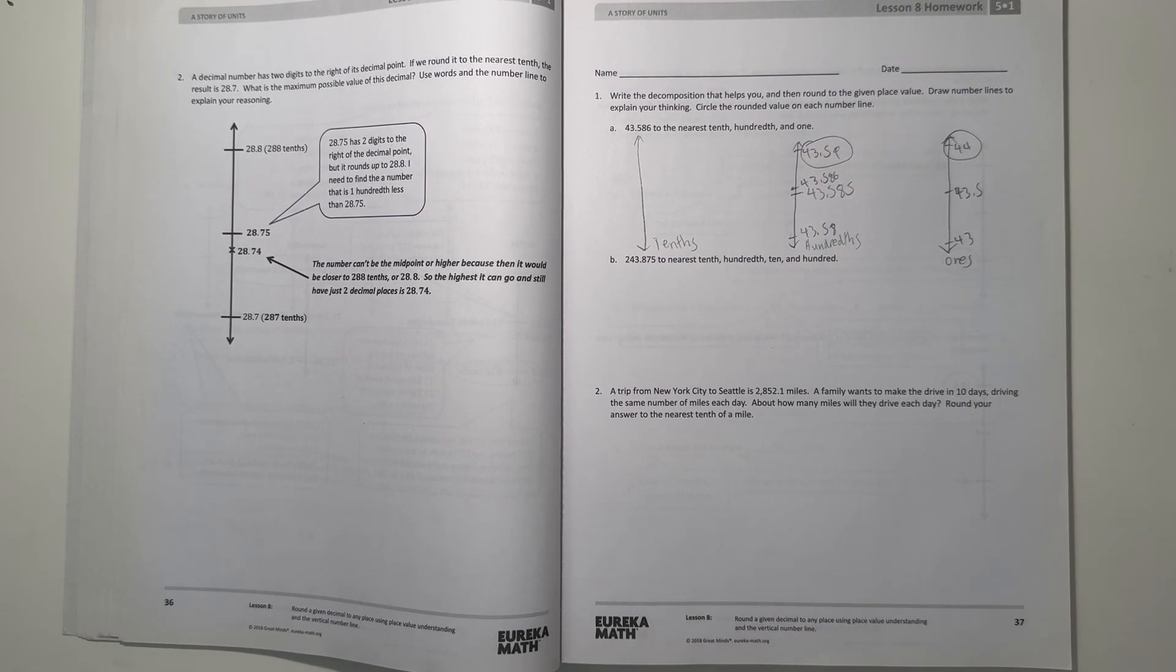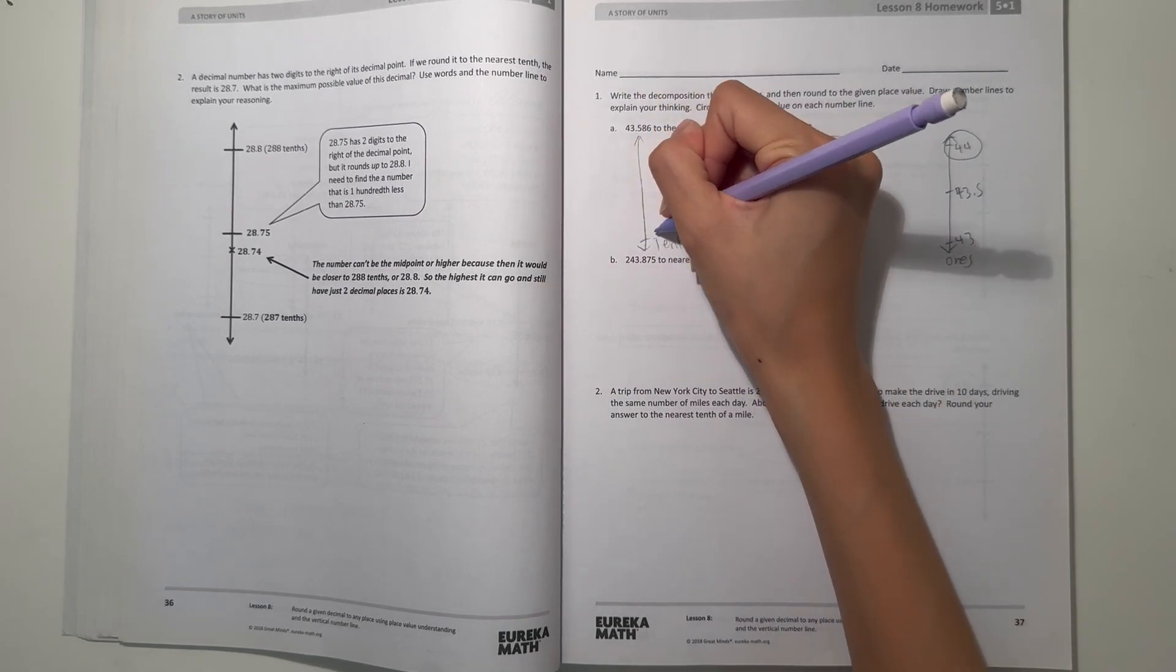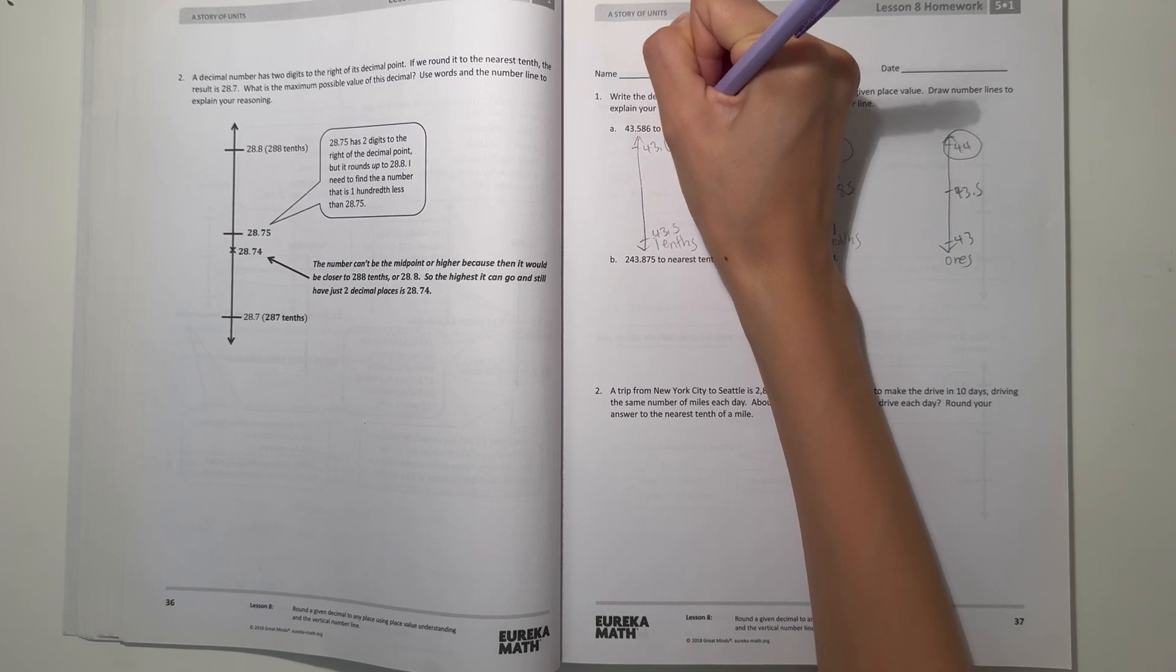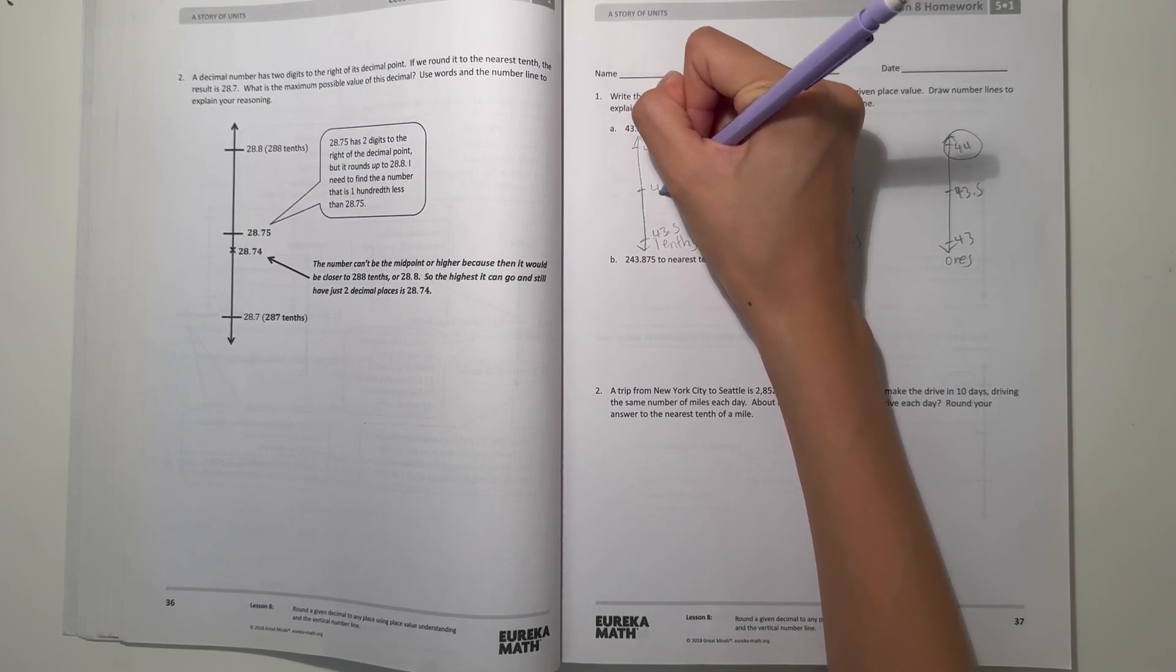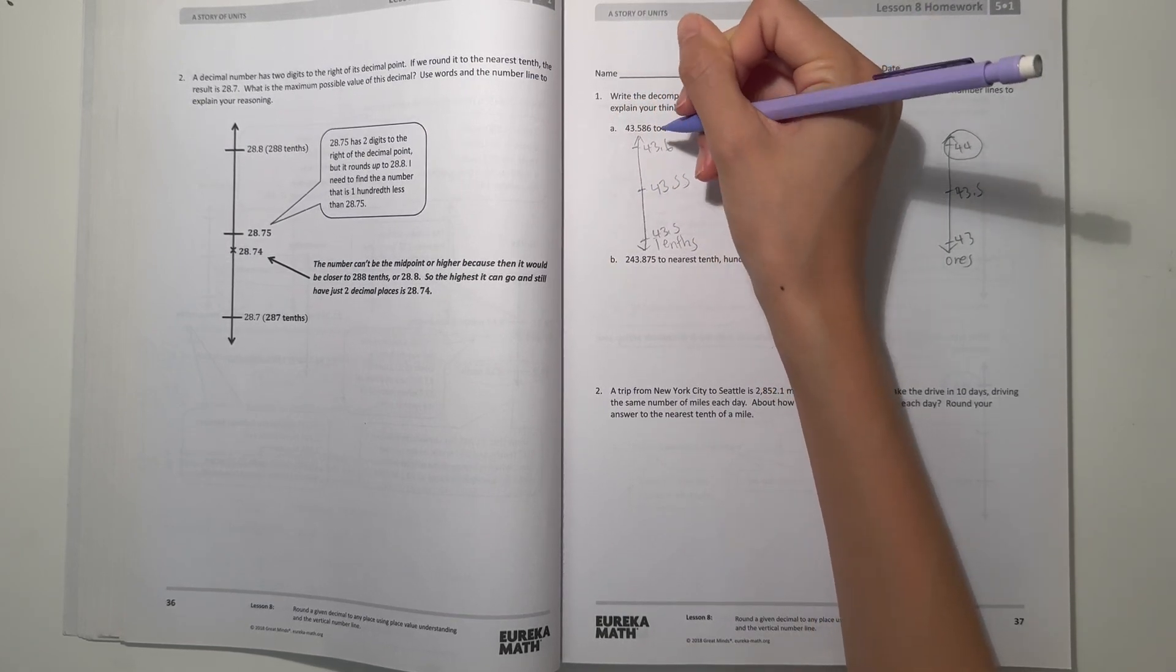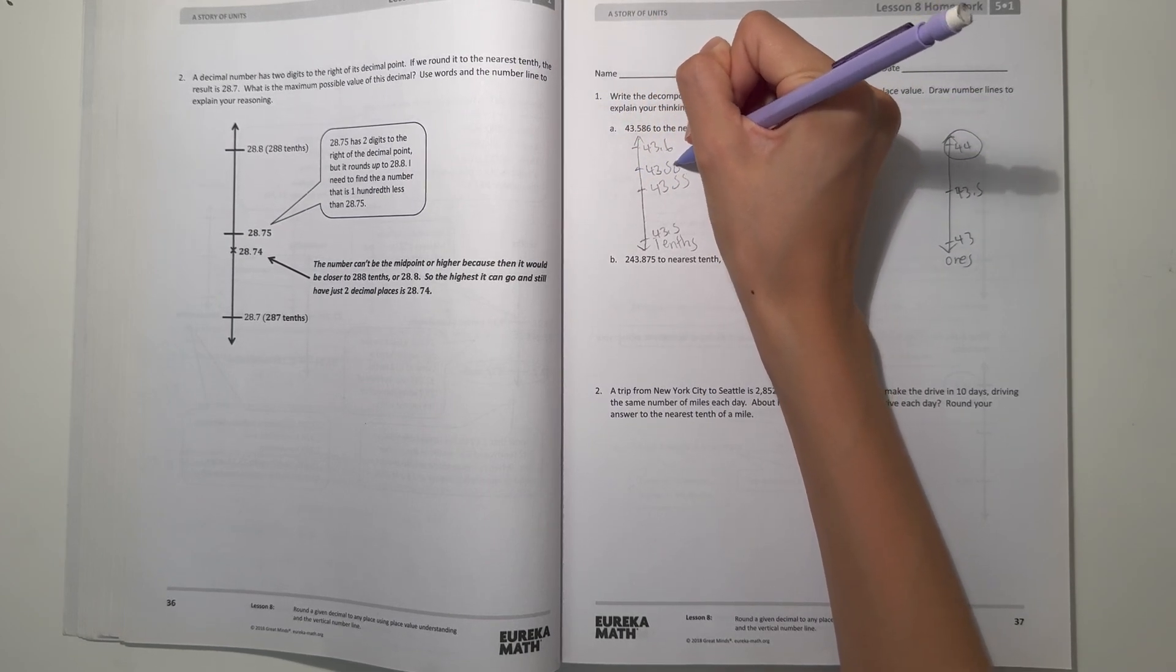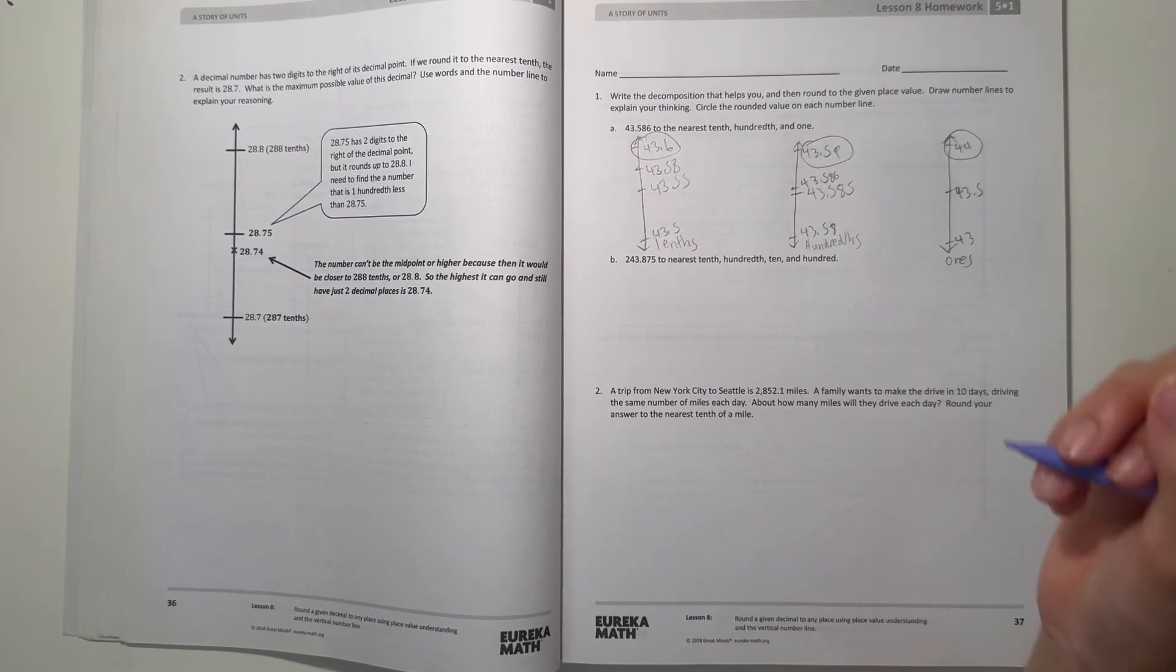And if we're rounding to the nearest tenths, it's in between 43.5 and 43.6. And our midpoint would be 43.55. So here we have 43.58, so that would be like here. So then we round up to 43.6.